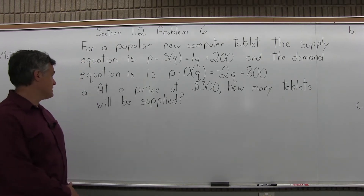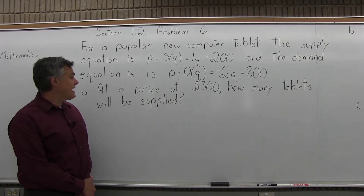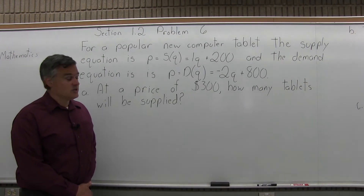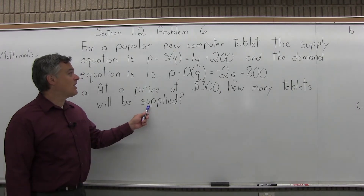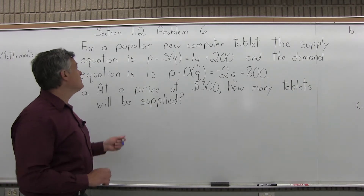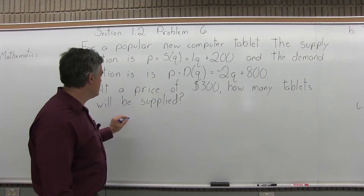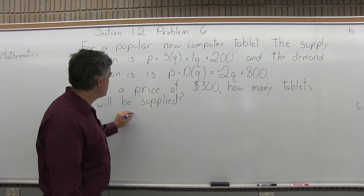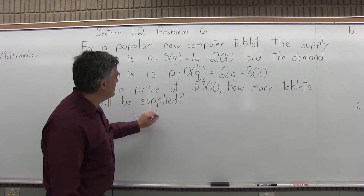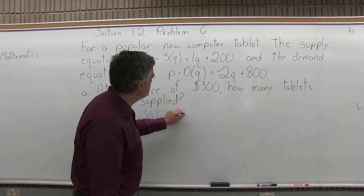Part A: at a price of $300, how many tablets will be supplied? Since it's asking about supply, you have to pick the correct equation. It's labeled the supply equation, and the S in parentheses stands for supply. So we start with P equals S(Q) equals 1Q plus 200.